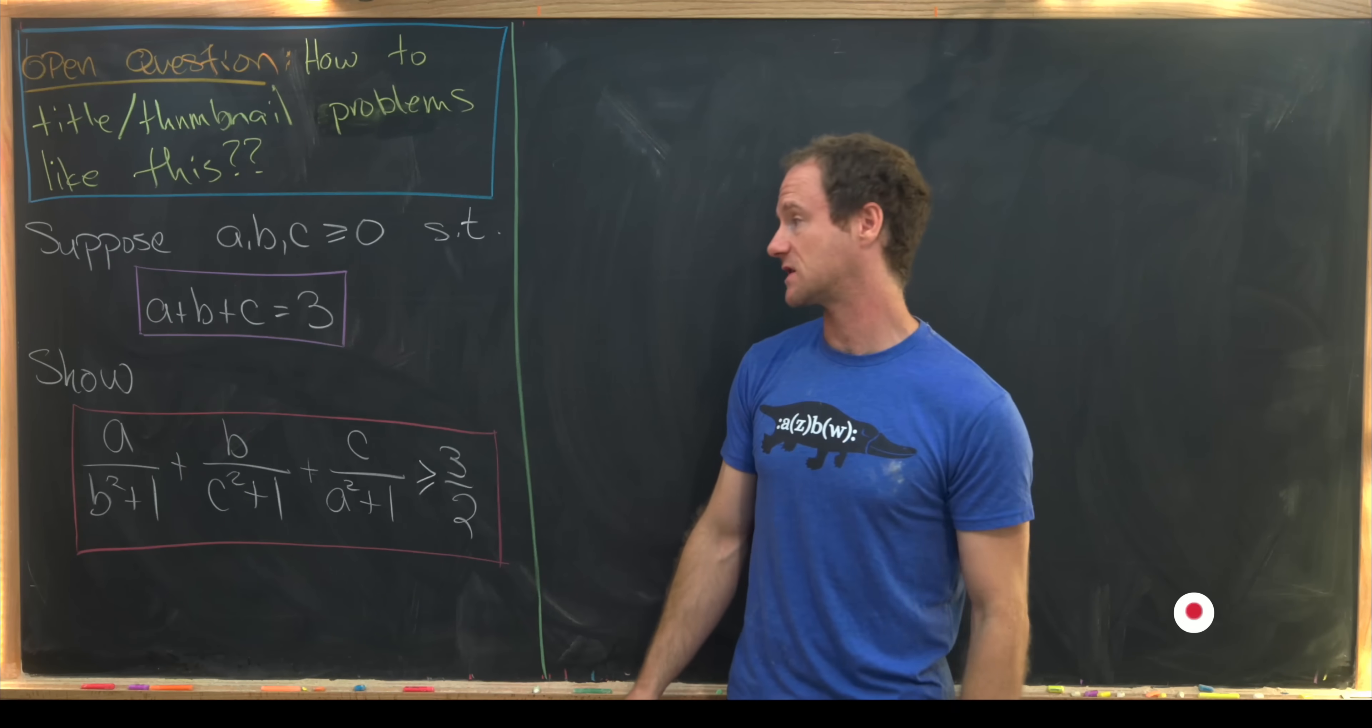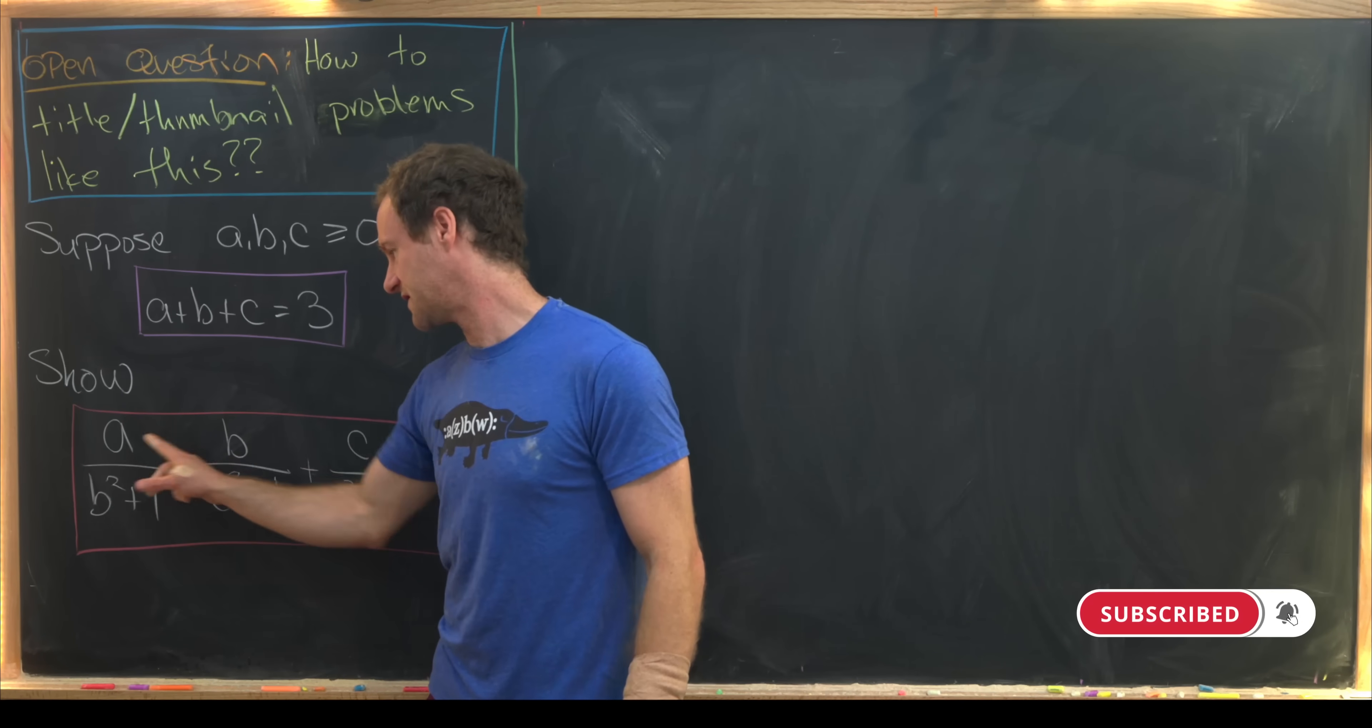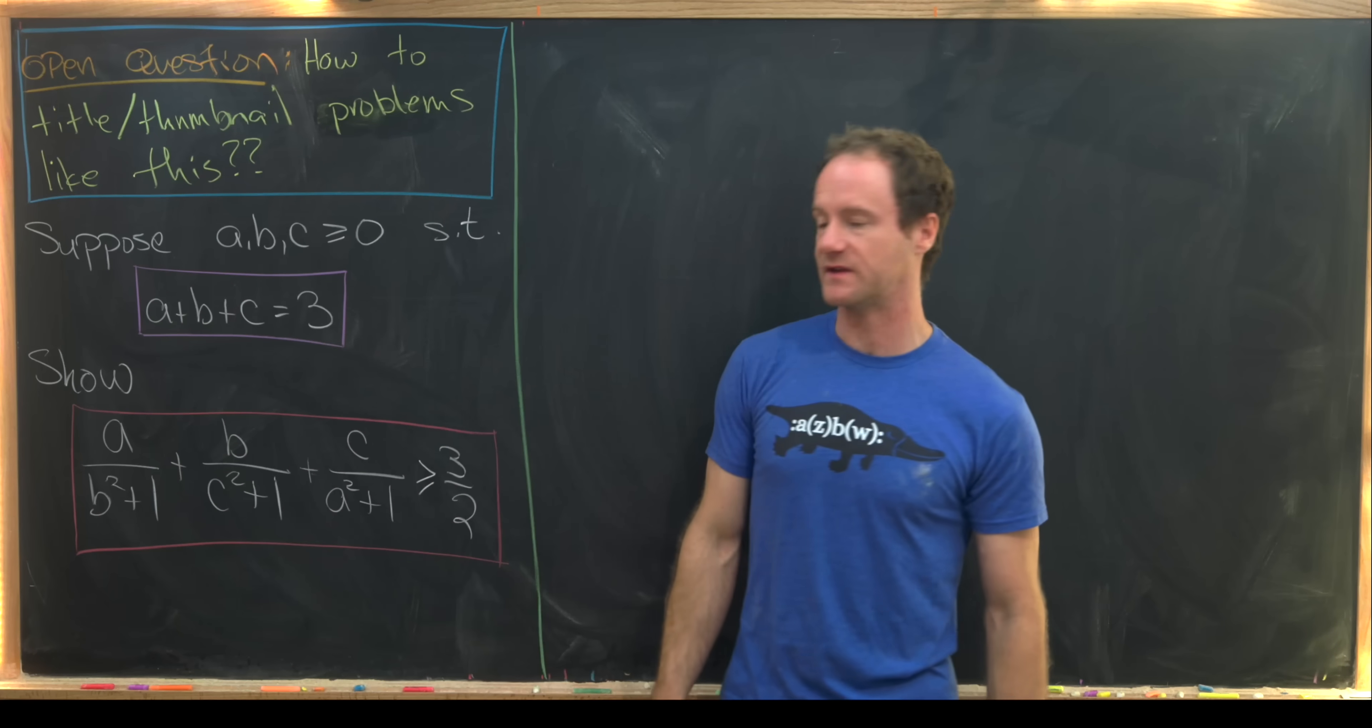In particular, because of that cyclic symmetry, we'd like to extract an a out of this, a b out of this, and a c out of this.